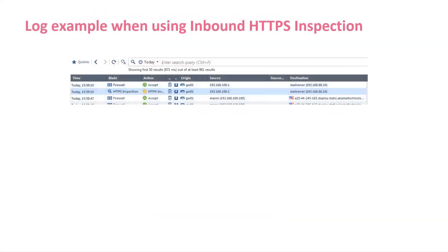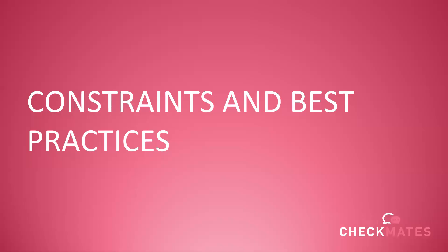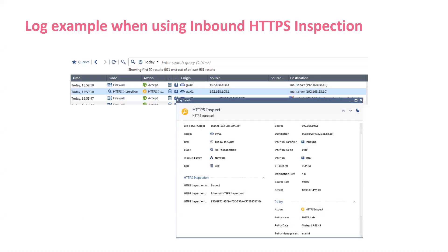You create an outbound rule for bypass traffic in a similar way, and you create an inbound rule to inspect traffic using the server certificate you have imported. Whatever blades you have turned on, if there's a rule for HTTPS inspection, we inspect and then apply access control and all of the blades.